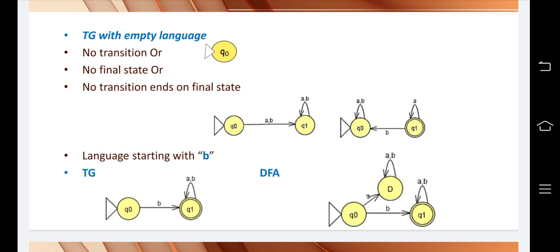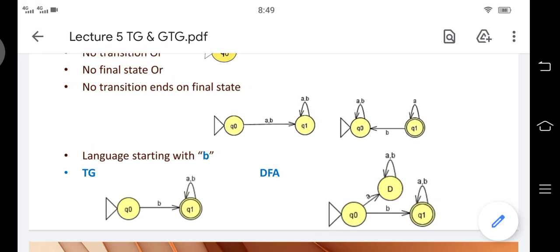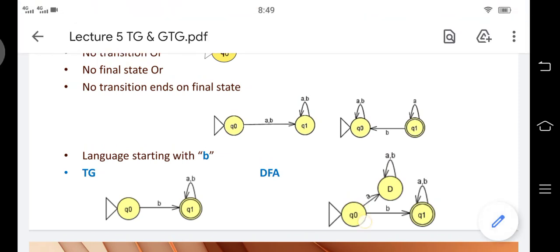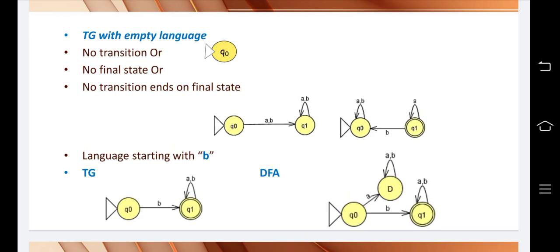The second example is a language starting with B. Starting with B means B multiplied by (A+B)* — that will be the regular expression. The transaction graph is simple: Q0 is the initial state, we take a transition on B to Q1, which is the final state, and then any combination of A, B can occur via a loop. For the DFA, it is more complex — we need a transition from Q0 to a dead-end state on A, because Q0 has no transition for A.